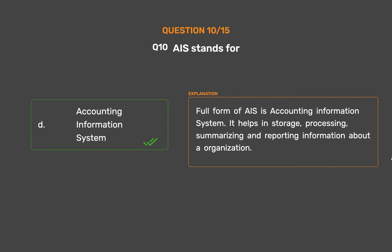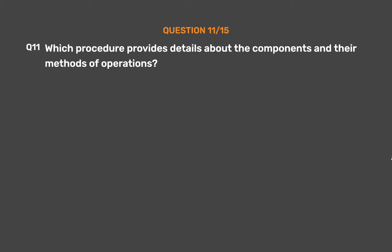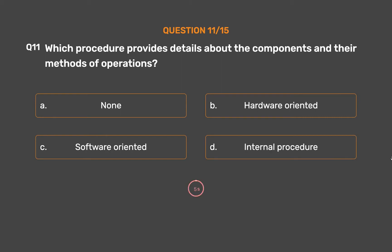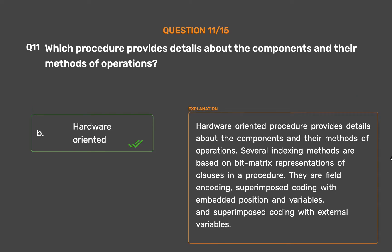It helps in storage, processing, summarizing and reporting information about our organization. Question No. 11. Which procedure provides details about the components and their methods of operations? Option A: None. Option B: Hardware oriented. Option C: Software oriented. Option D: Internal procedure. The correct answer is Option B — Hardware oriented. Hardware-oriented procedure provides details about the components and their methods of operations. Several indexing methods are based on bit matrix representations of clauses in a procedure — field encoding, superimposed coding with embedded position and variables, and superimposed coding with external variables.